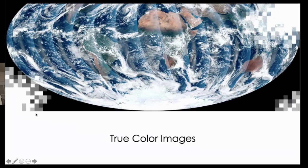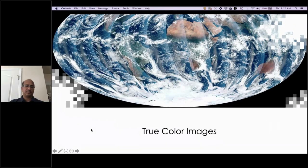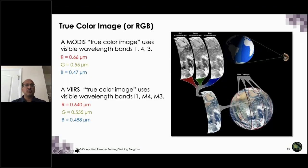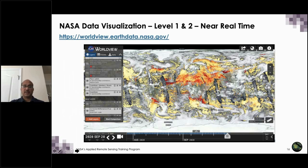The first and most useful product that most people like to use is true color images. True color images are formed using measurements in three wavelengths: red, green, and blue. We have been doing this using three bands in MODIS, and VIIRS has almost identical three bands with a slight difference in the specific wavelength. So we can get true color images from VIIRS as well. You can access those true color images from NASA Worldview.